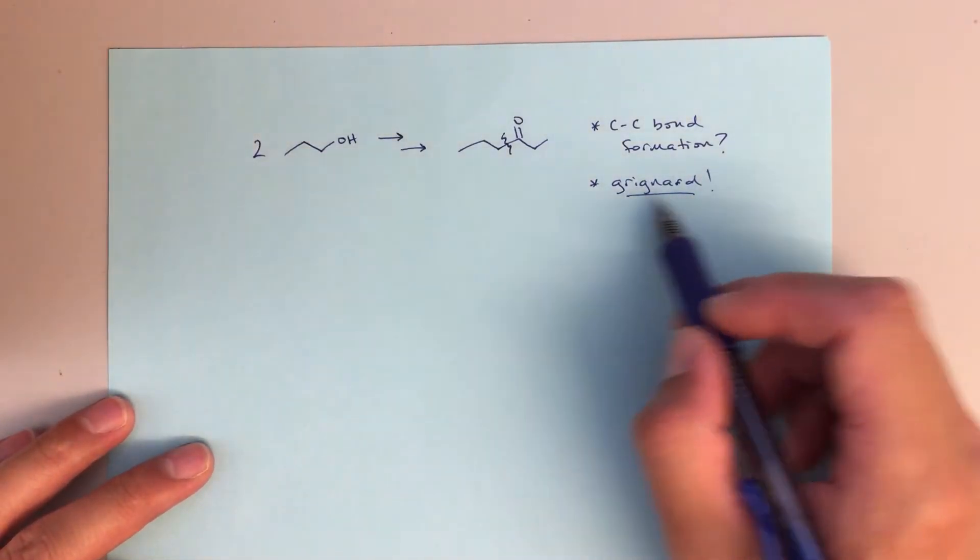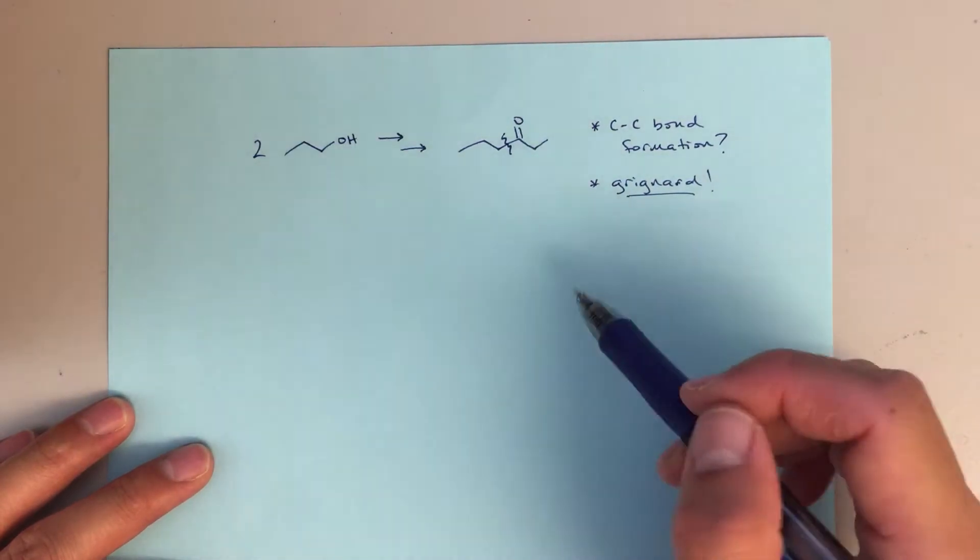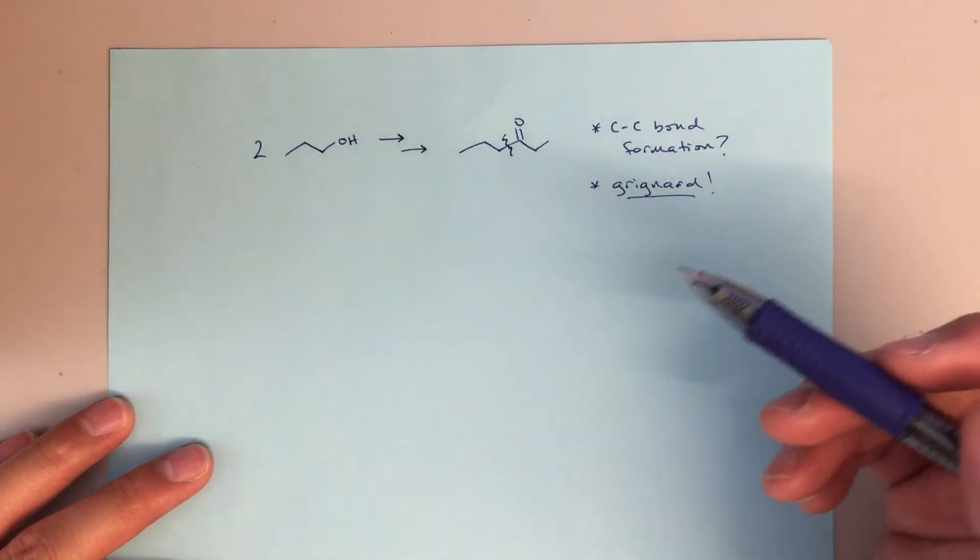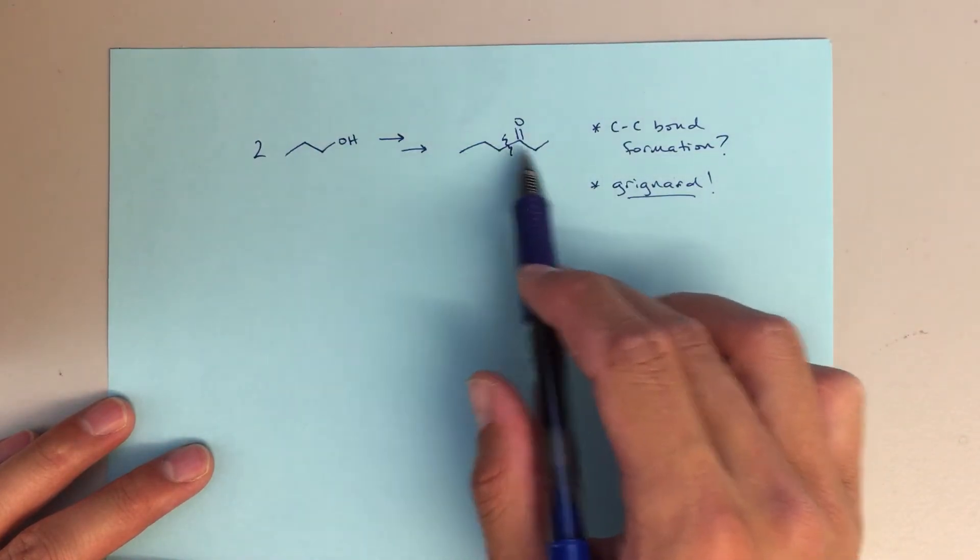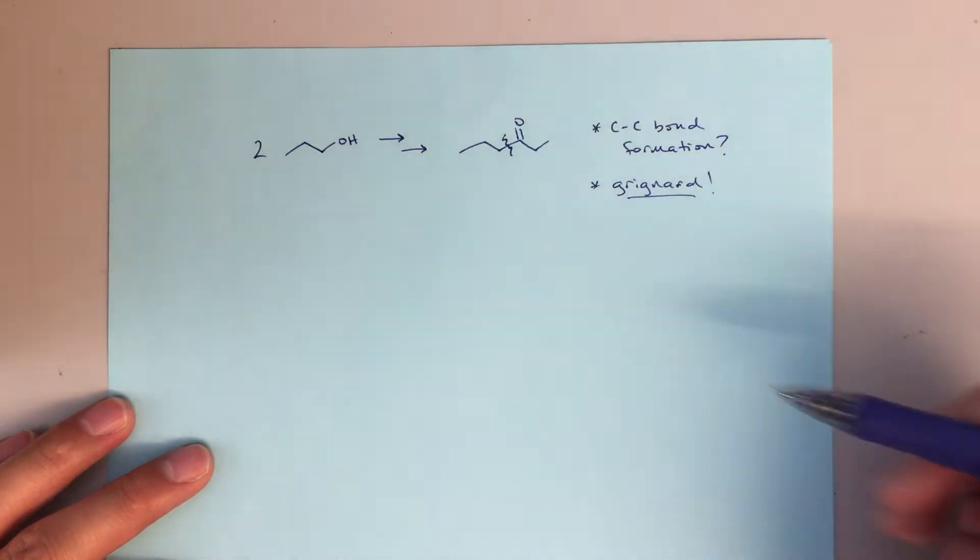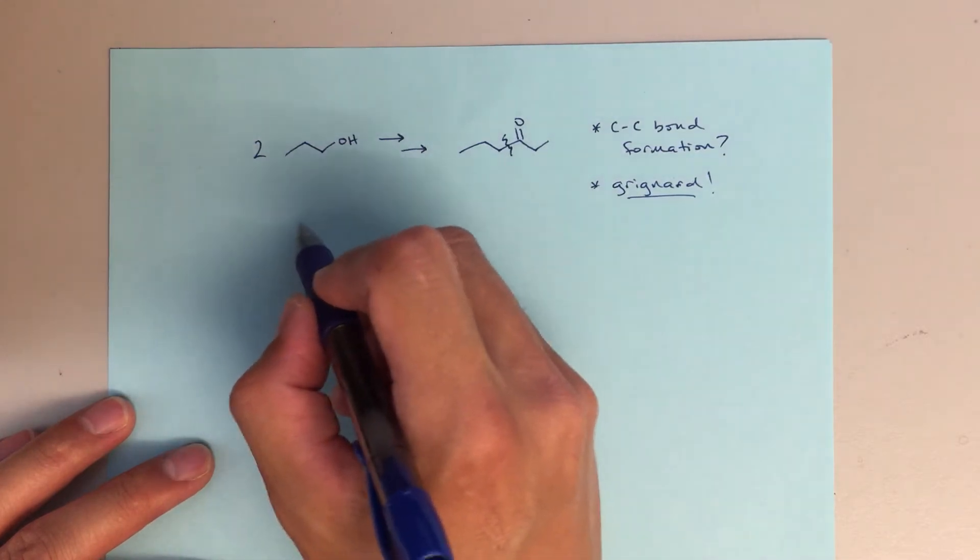So in terms of the Grignard, I'm not going to worry about how do I get to the pieces that I need, the proper pieces. I'm going to say what are the proper pieces? What are the pieces that I would need to form this six-membered carbon backbone?